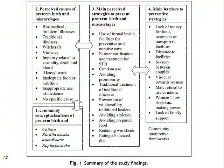The third theme is about community strategies for preventing preterm birth. What strategies do they use? These include timely treatment of traditional illnesses — ensuring people have access to treatment on time for what they consider traditional illnesses — and also using health facility treatment for STDs.